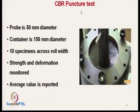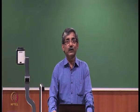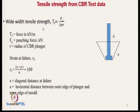From the CBR test we can calculate the wide-width tensile strength Tf (in kN/m). Fp is the punching force (in kN) and R is the radius of the CBR plunger, so the total circumference is 2πR. Therefore, Fp divided by 2πR gives the tensile strength of the geotextile. From the CBR test we can measure both tensile strength and strain at failure.